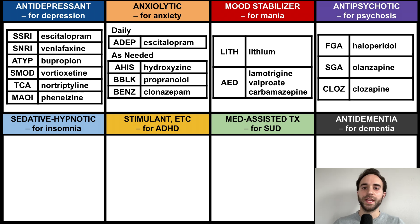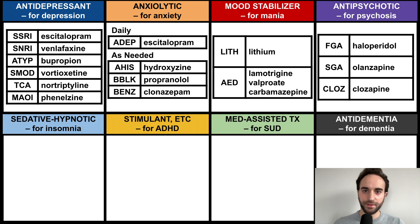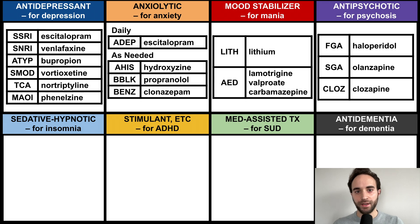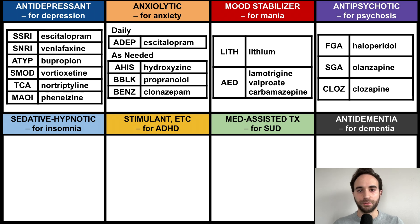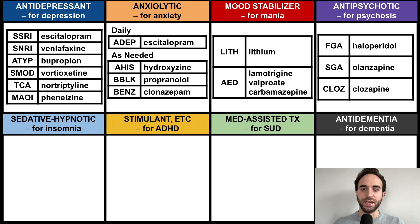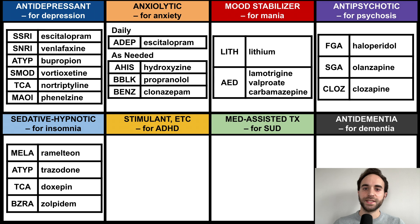Next are the antipsychotics, which include the first- and second-generation antipsychotics. Clozapine is a second-generation antipsychotic, but it is placed in a separate class due to its distinct characteristics, particularly its higher efficacy and need for intensive side-effect monitoring.